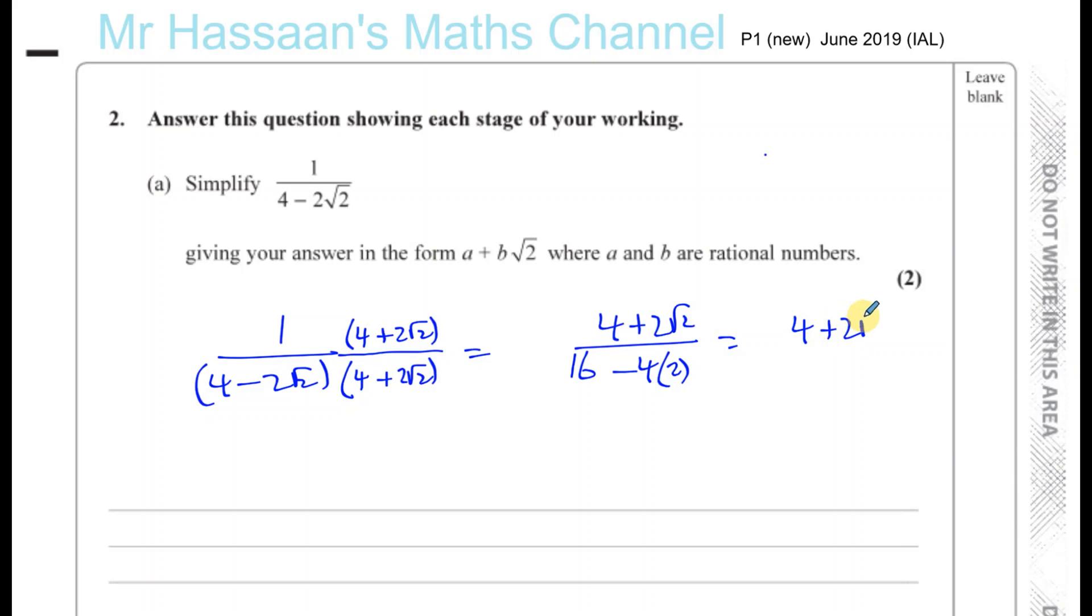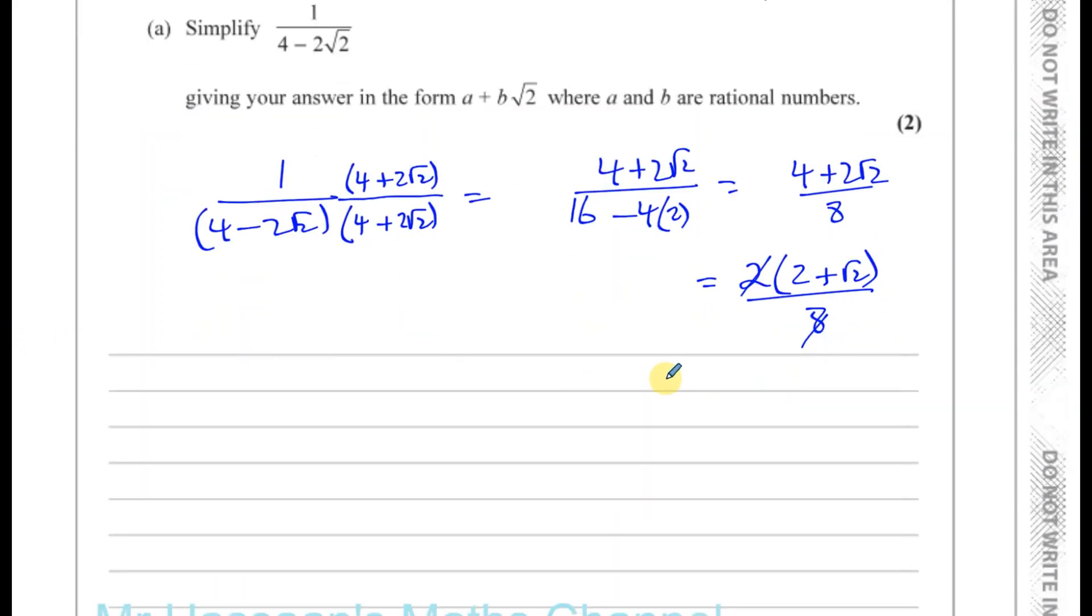If you want to simplify that, you can take a common factor of 2 from the numerator. So you have 2 times (2 plus √2) over 8. And we can cancel out a common factor of 2 from the numerator and denominator. And you're left with (2 plus √2) over 4. Now, because they asked us to put it in this form where you have separate terms, split this into two separate fractions. So you have 2 over 4, which is a half, plus √2 over 4, which is like a quarter times √2. And that's the best way to express your answer in this form.